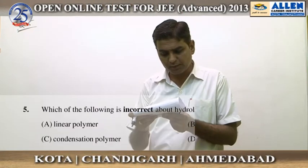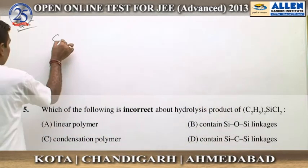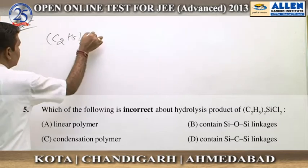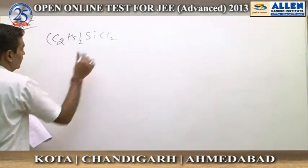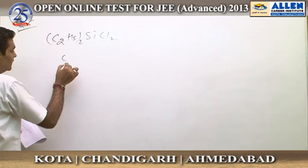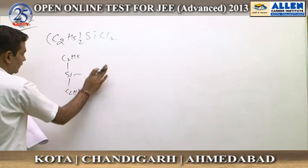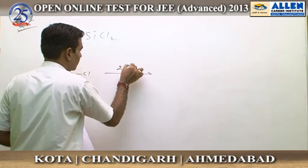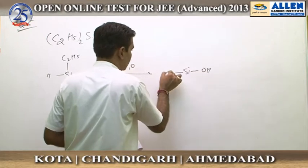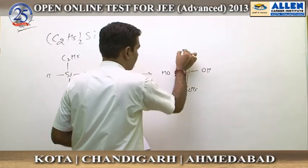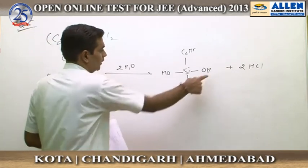Question number 5: which of the following is incorrect about the hydrolysis products of (C2H5)2SiCl2? It is an alkyl-substituted chlorosilane which produces silicon polymers on hydrolysis. On hydrolysis, it produces Si(OH)2(C2H5)2 plus 2HCl — this is a nucleophilic substitution reaction where two OH groups replace the chlorine atoms.